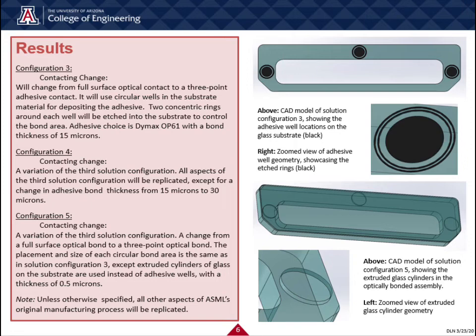Our fourth solution configuration is a variation of the third solution configuration. The purpose of it is to understand the effect of the bond thickness on the stress induced to the window. All aspects of the third solution configuration will be replicated here, except that the bond thickness will be increased from 15 microns to 30 microns.